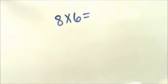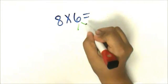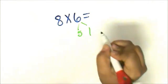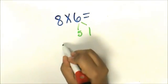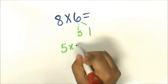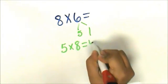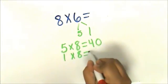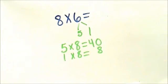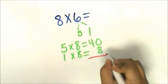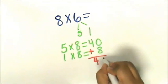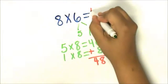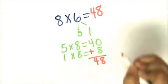Let's try one more. Let's decompose 6 into 5 and 1. 5 times 8 equals 40, 1 times 8 equals 8. 40 plus 8 is 48. The product of 8 and 6 is 48.